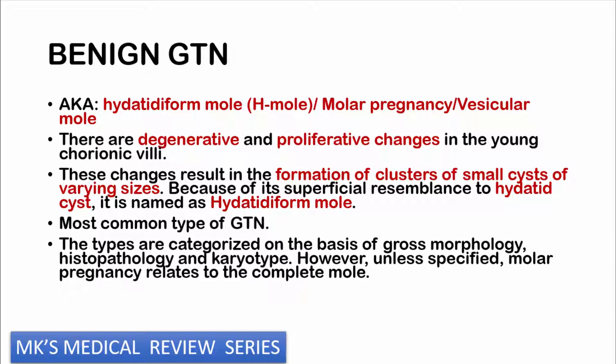Here there are going to be degenerative as well as proliferative changes happening in the young chorionic villi. These changes result in formation of small cysts of varying sizes that look like grapes. Because of their superficial resemblance to hydatid cysts, they are referred to as hydatidiform moles. They are the most common type of gestational trophoblastic neoplasms and can be classified by gross morphology, histopathology, and karyotype. Unless specified, molar pregnancies are usually used to refer to complete moles.